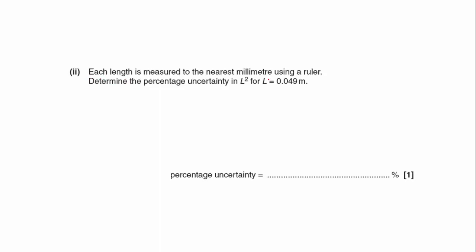Each length is measured to the nearest millimetre using a ruler. To determine the percentage uncertainty in L-squared for L equals 0.049 metres. So if we're using a ruler with millimetre, that means our absolute uncertainty would be plus or minus 0.001 metres. So we need to find out what is the absolute uncertainty as a percentage of the measurement. So 0.001 divided by 0.049 and multiply that by 100.